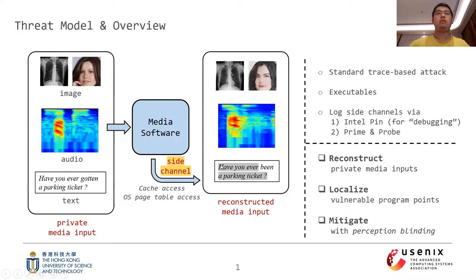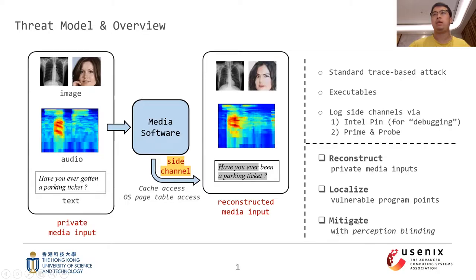In this work, we focus on side-channel analysis of media software and the privacy of media inputs of users — for example, images, audios, and text. In our threat model, we consider standard trace-based attack and we analyze software executables. We assume that side-channel traces can be logged using off-the-shelf mechanisms like standard parameter probes. Our framework can reconstruct private media inputs from side-channel traces and localize side-channel leaks in the program. We further propose a lightweight but highly effective mitigation scheme called perception blending to defend our attack.